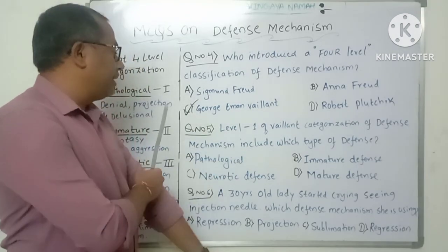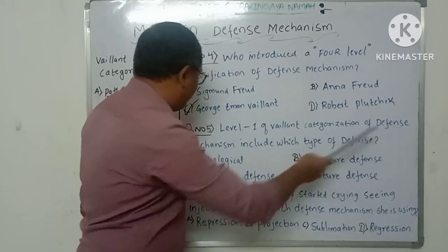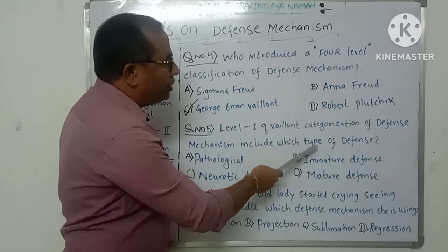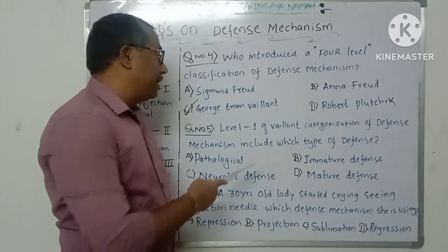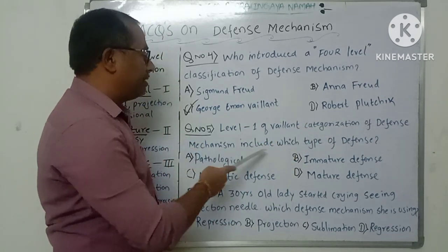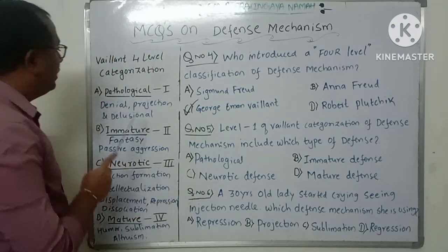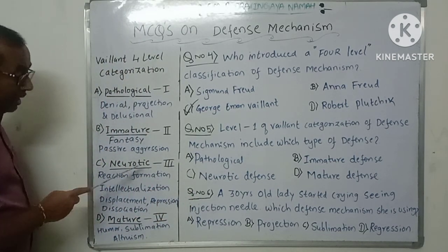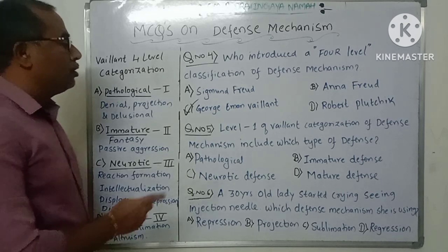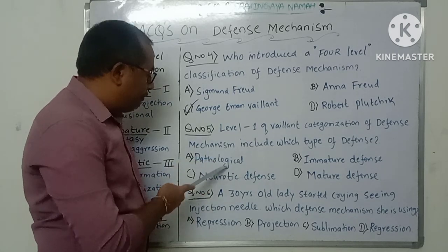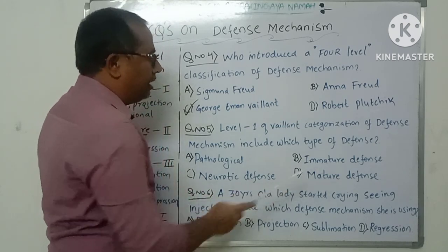Question number five: Level one of Vaillant's categorization of defense mechanisms includes which type of defense? We have seen that level one is pathological, level two is immature, level three is neurotic, and level four is mature defense mechanisms. They asked about level one, so the answer is pathological defense mechanisms.